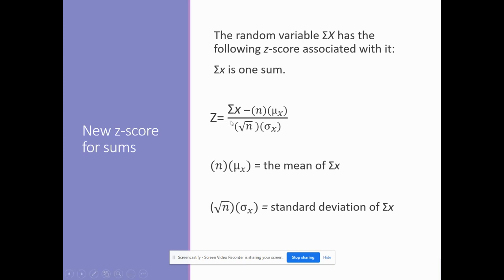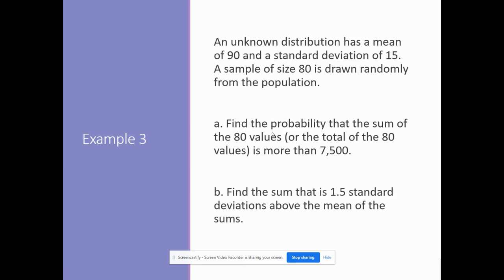All right, here is the Z-score for that, so don't let that throw you. So it's the summation of X minus n times the mean divided by the square root of the sample size times the standard deviation. All right, so let's do an example on the next one.